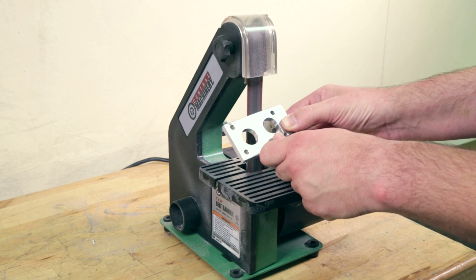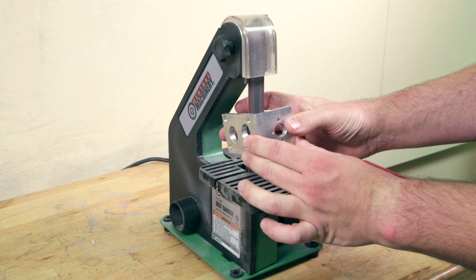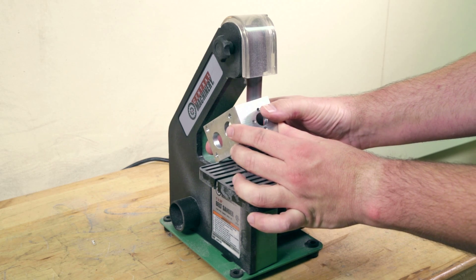This sander features a one inch wide belt providing access to interior corners and greater precision with small workpieces.